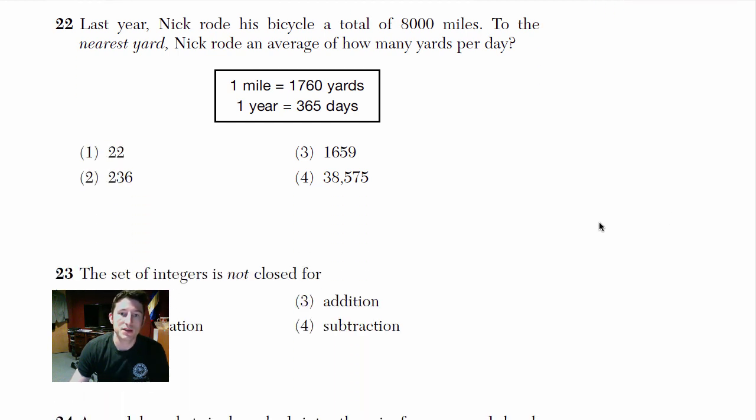Last year Nick rode his bicycle a total of 8,000 miles. To the nearest yard, Nick rode an average of how many yards per day? So they give us this chart and they tell us that one mile is 1760 yards. So if I do 8,000 miles it's going to be a ton of yards. So I'm going to multiply. I'm just going to do 8,000 times 1760. That's going to give me the total amount of yards. And it's going to be a huge number.